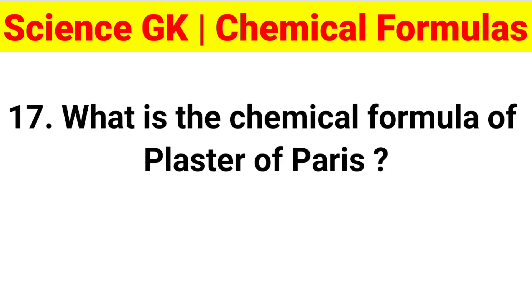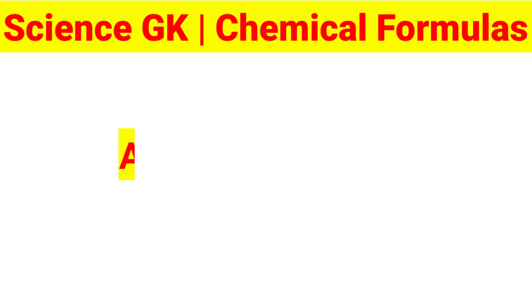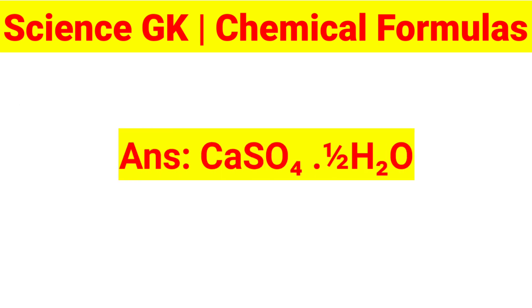Question 17: What is the chemical formula of plaster of Paris? Answer: CaSO4·½H2O.